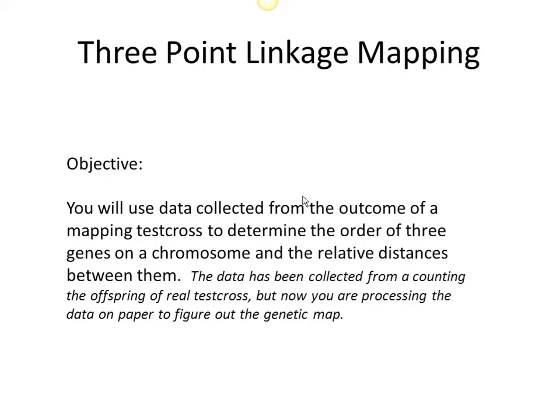This tutorial is to help you with three-point linkage mapping. This first segment will be about determining gene order as the first step. The objective is to use data collected from the outcome of a mapping test cross to determine the order of three linked genes on a chromosome and the relative distances between them. The data has been collected from a real experiment and you process it on paper to figure out the genetic map.